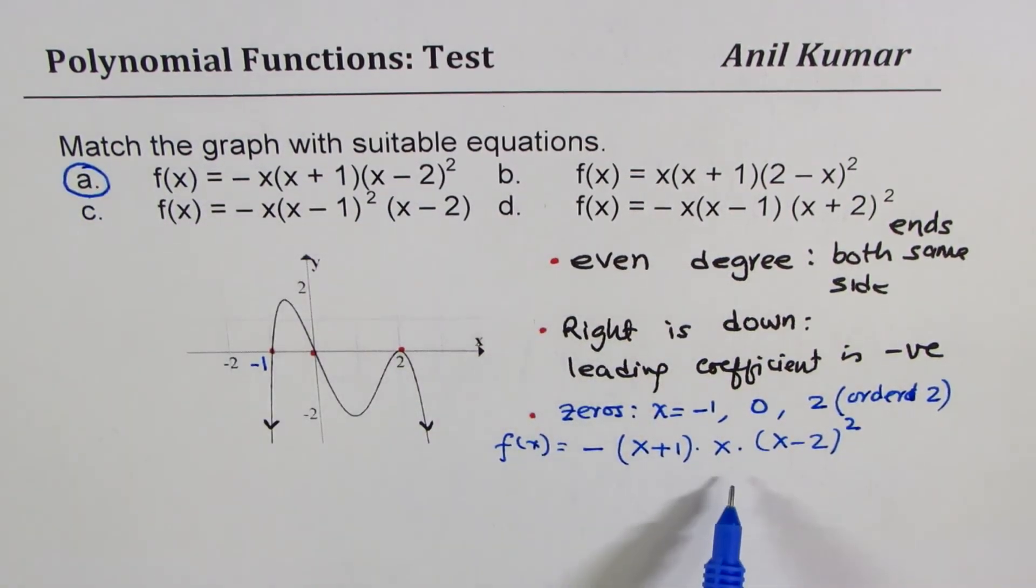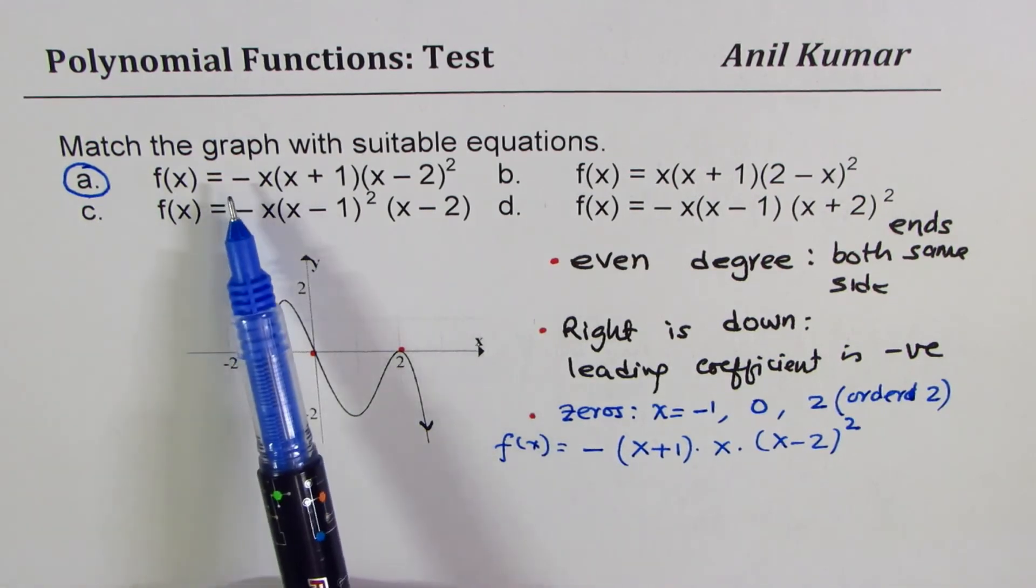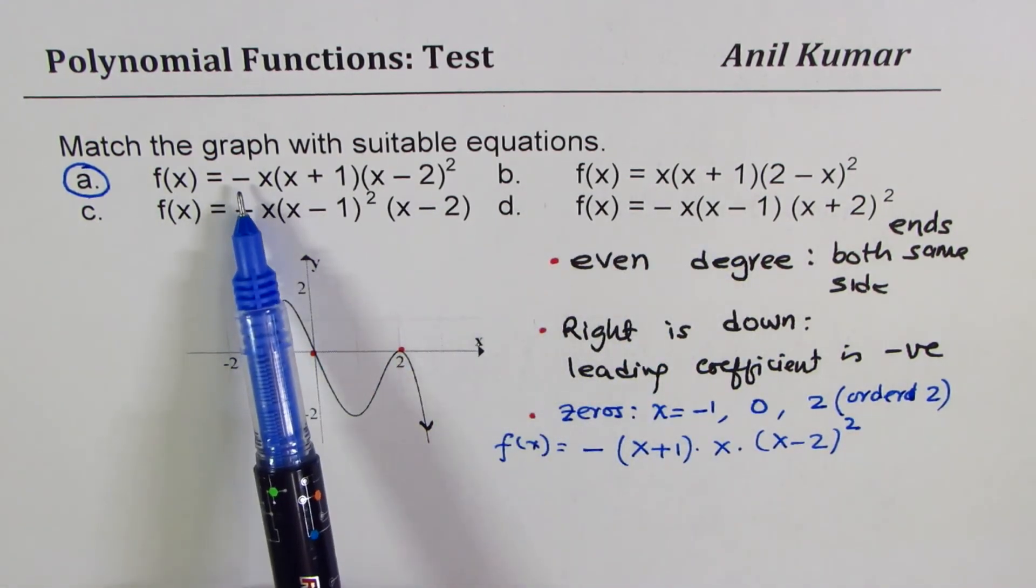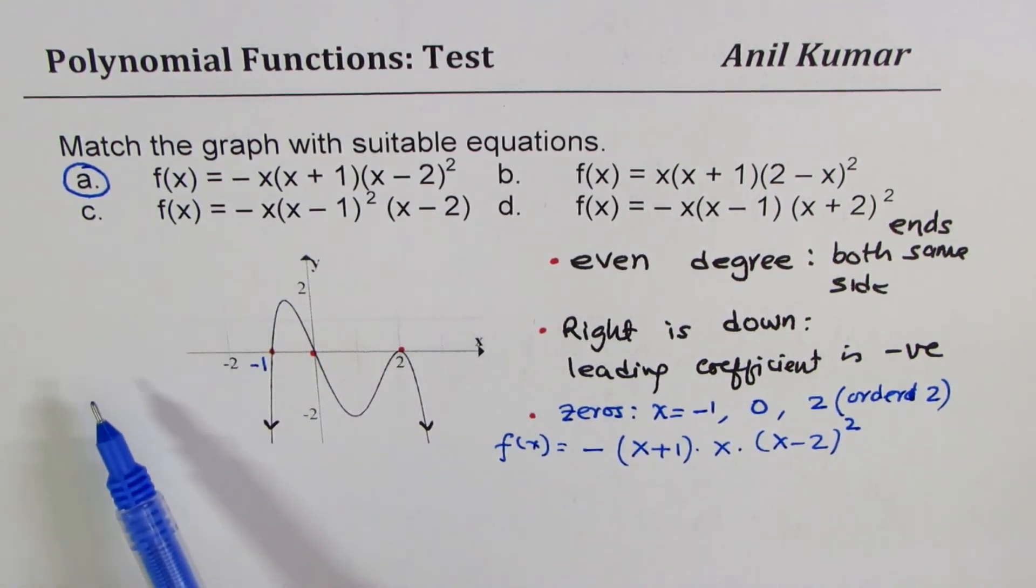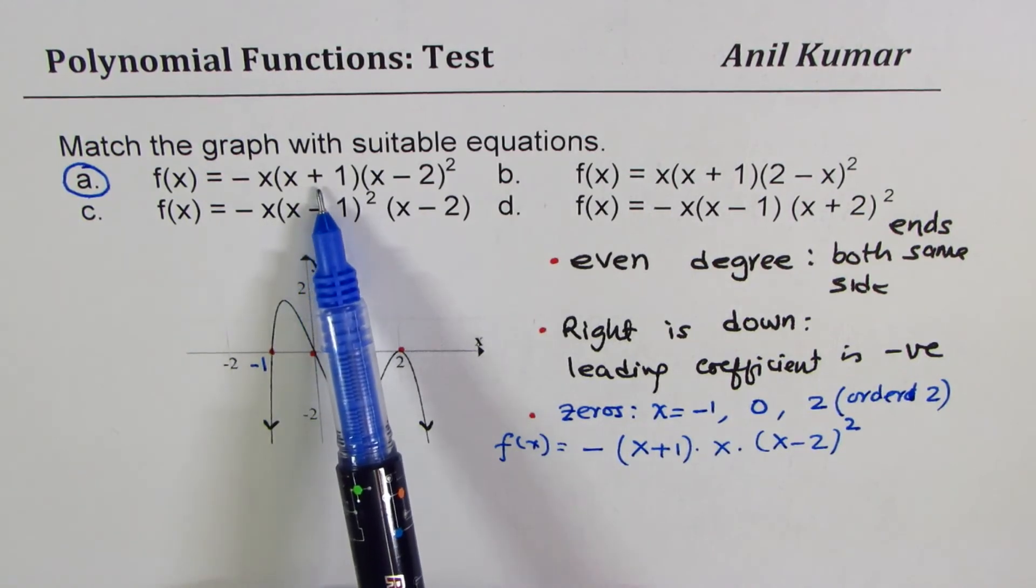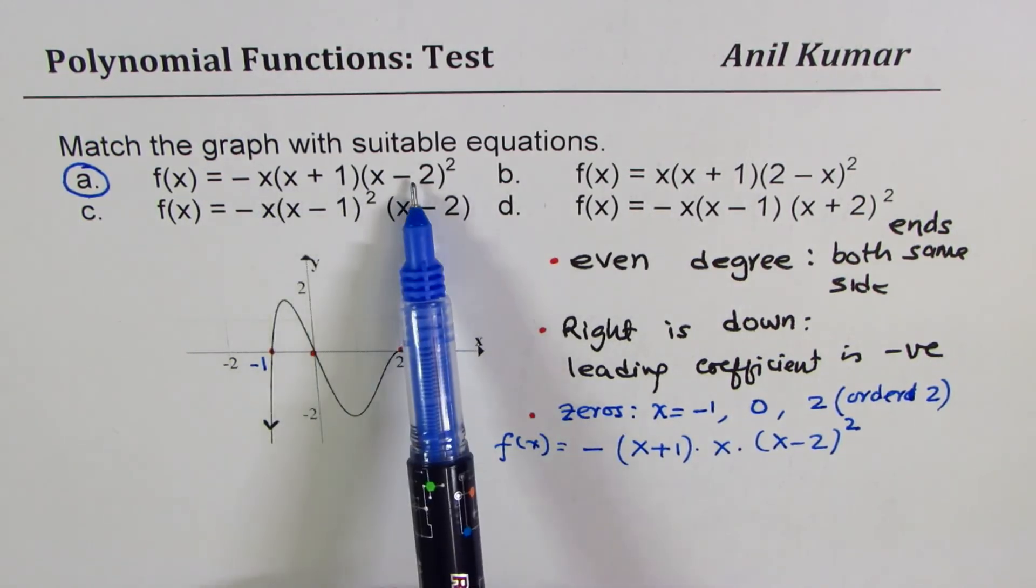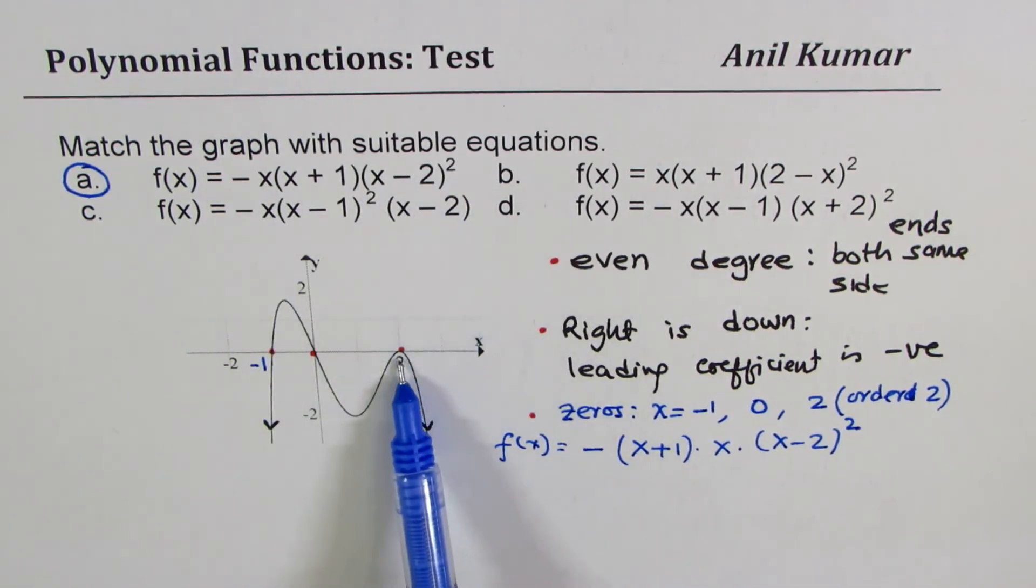So I have shown you a method, but when you look at the equations, you know this could be the right answer, since negative means going down. Now, matching the roots: linear, linear, and quadratic root, even degree root. So A matches.